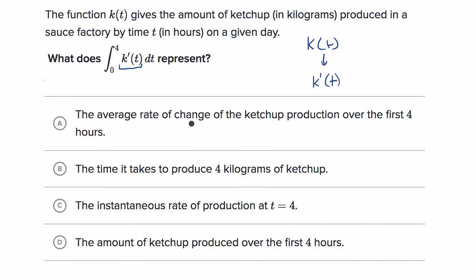The average rate of change of the ketchup production over the first four hours. No, that does not tell us the average rate of change. There's other ways to calculate that. The time it takes to produce four kilograms of ketchup. So does this represent the time it takes to produce four kilograms of ketchup? No, this four is the time right over here. This is going to tell you how much ketchup gets produced from time zero to time four.